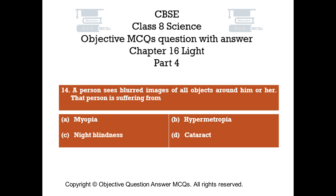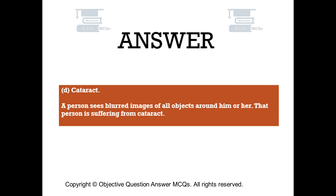Question number 14. A person sees blurred images of all objects around him or her. That person is suffering from: Option A myopia. Option B hypermetropia. Option C night blindness. Option D cataract. The right answer is option D: cataract. A person who sees blurred images of all objects is suffering from cataract.